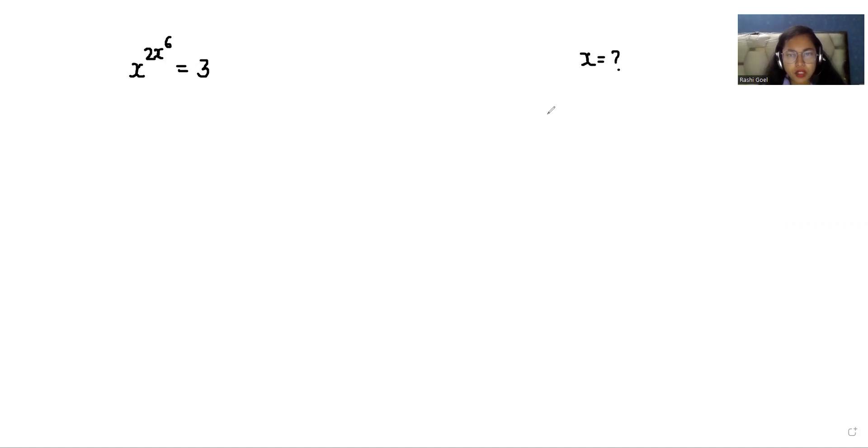So first I am using the substitution method in this question. I am going to replace x^6 as A. So A equals x^6. Now we have property that x^m power n equals x^(mn). So we are going to use it.